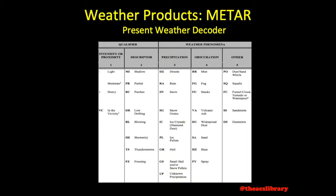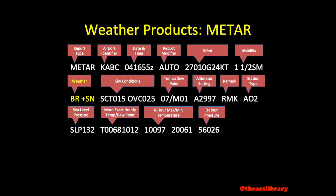Weather phenomena is reported in the format found in AC 00-45H or Aviation Weather Services. It includes precipitation such as rain or drizzle, obscuration such as fog, and unusual weather such as tornadoes and sandstorms. In our example, we have mist and heavy snow at the airport. Light snow would be reported with a minus sign instead of a plus sign, and moderate snow would have no prefix.